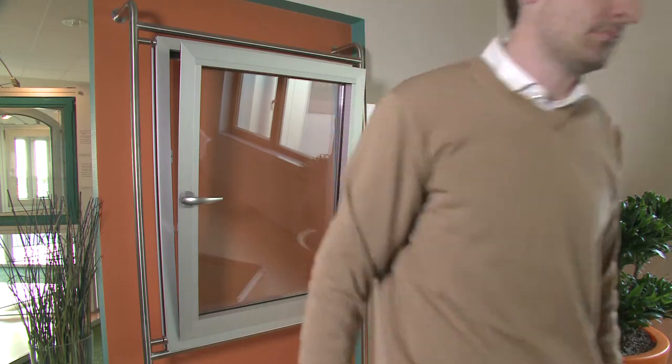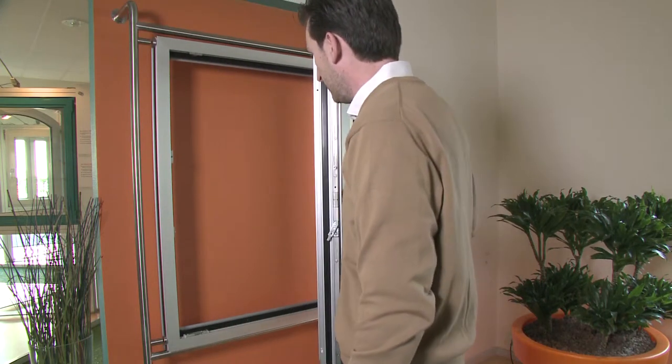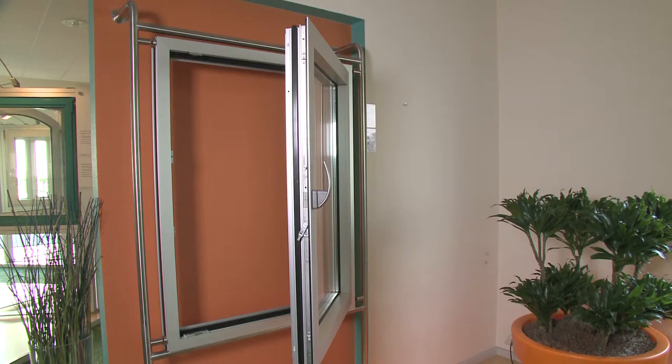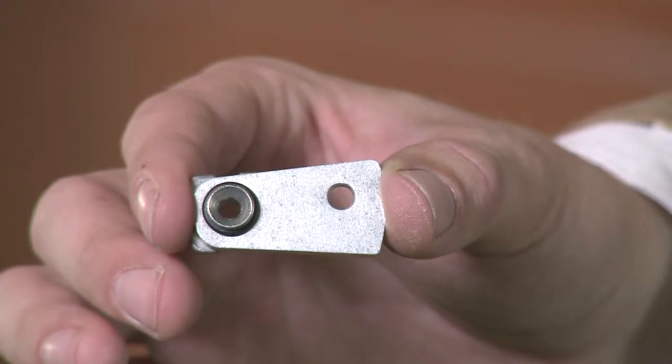Sometimes it can be useful to turn a tilt and turn window into a tilt only unit. There may be reasons why you want to block off the turn mode. Maybe you have guests staying and a child will be using the room with the window in it, or there may be other reasons why it would be unsafe or undesirable to allow people to be using the turn mode.